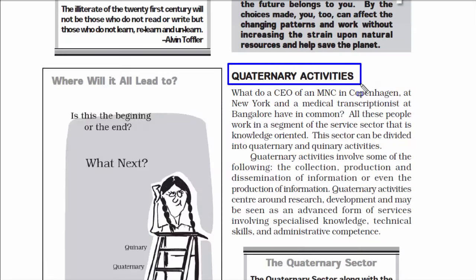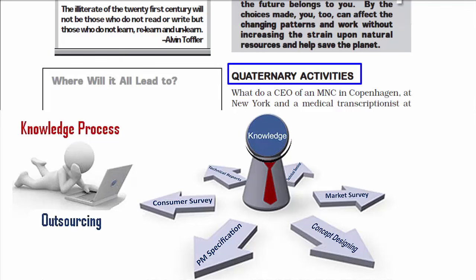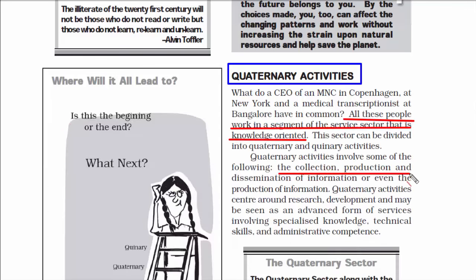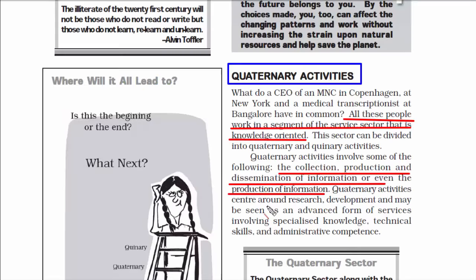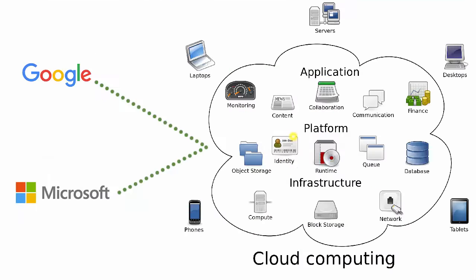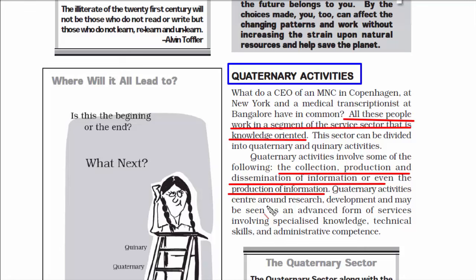We now move on to quaternary activities — the fourth phase of a nation's economy. Both tertiary and quaternary are part of the service sector, but quaternary activities are totally knowledge-oriented. Have you heard of KPO — knowledge processing outsourcing? Knowledge and information-related work is carried out by workers in an organization. Examples of such companies include Deloitte, D.E. Shaw, Infosys, Genpact, Sutherland Global Services, etc. These companies generate product information and conduct research to benefit businesses — for example, Microsoft and Google give cloud services to major firms as per their requirements.